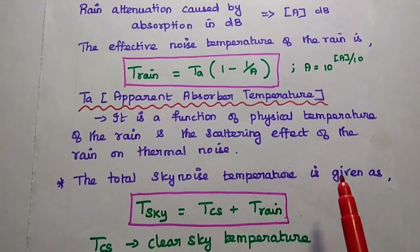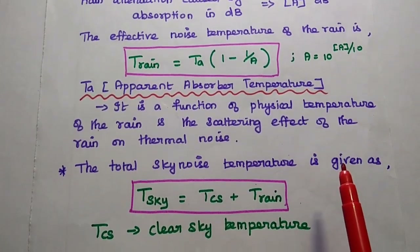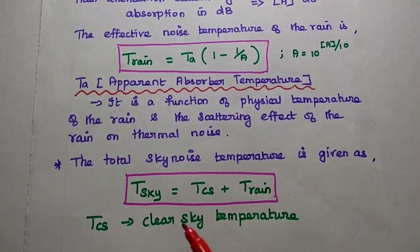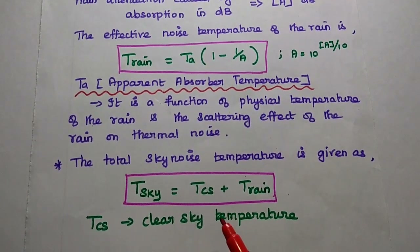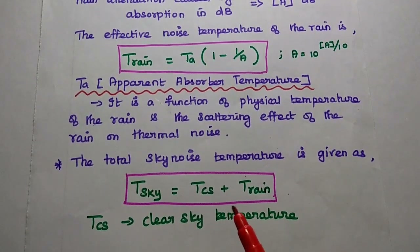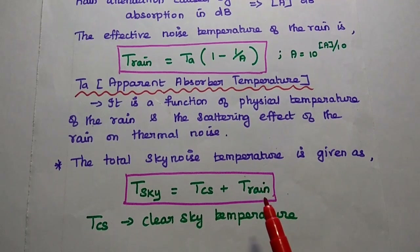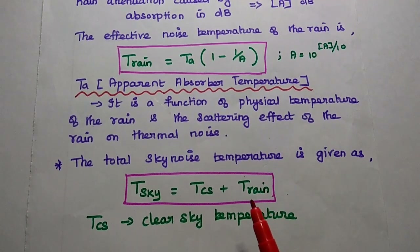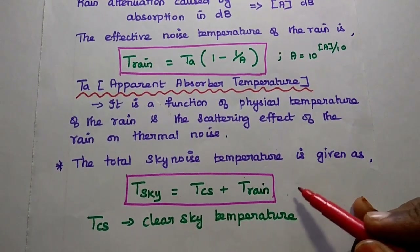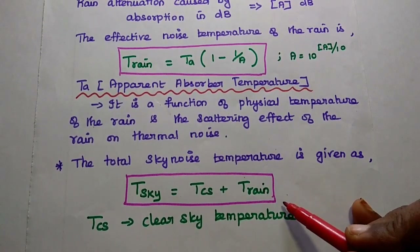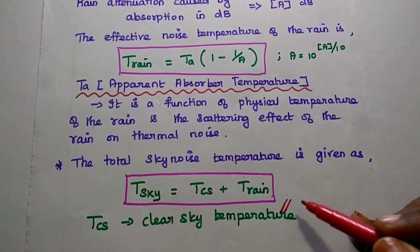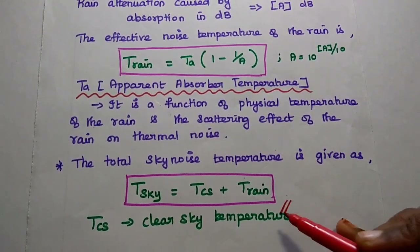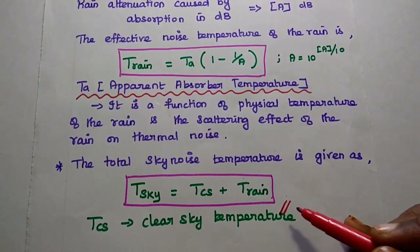The total sky noise temperature is given as T_sky = clear sky temperature + effective noise temperature of the rain. This is the total sky noise temperature in the downlink due to rainfall.